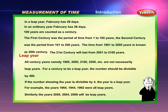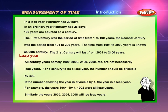If the number showing the year is divisible by 4, the year is a leap year. For example, the years 1964, 1944, and 1992 were all leap years. Similarly, the years 2000, 2004, and 2008 will be leap years.